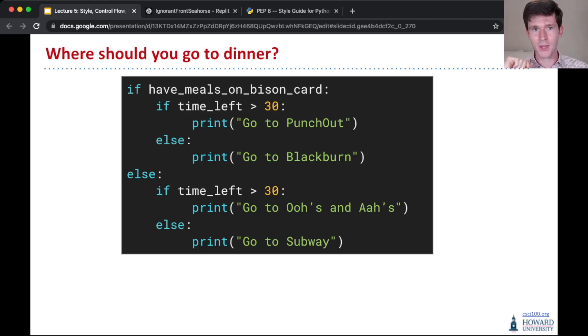If the time you have remaining is more than 30 minutes, then you go to somewhere maybe more sit-down-y. And if you have less than 30 minutes, you go to somewhere that's more fast food-y. So yes, absolutely you can have nested conditionals.